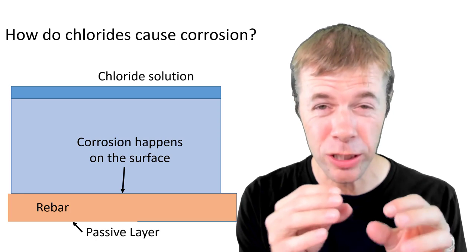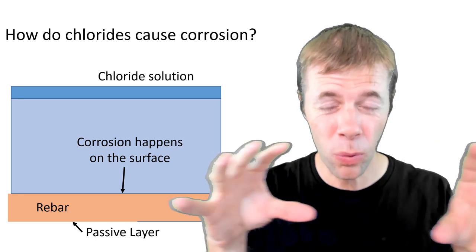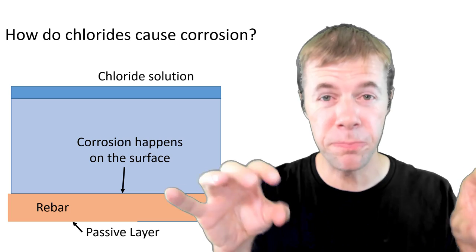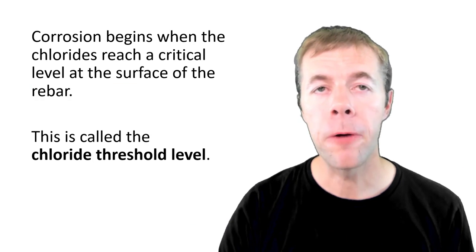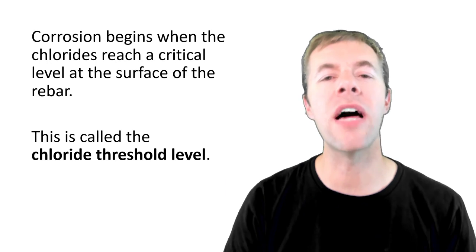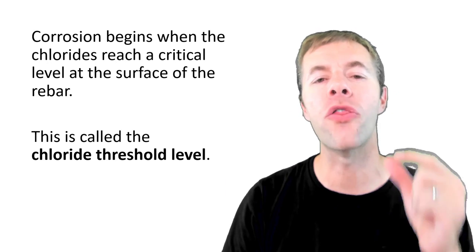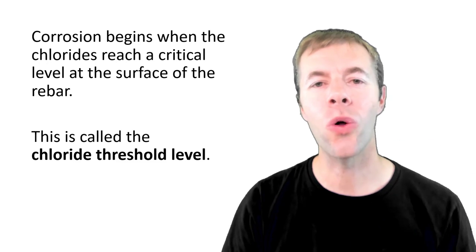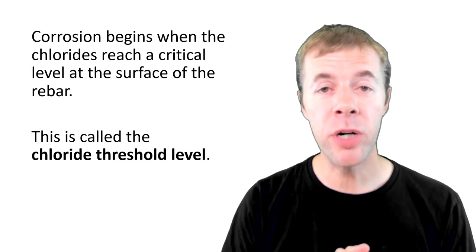Now the corrosion doesn't happen in one spot - the passive layer goes away everywhere and the corrosion happens pretty much uniformly around the bar. So corrosion begins when the chlorides reach this critical level at the bar. This is called the chloride threshold level, and I've talked more about it in previous videos.